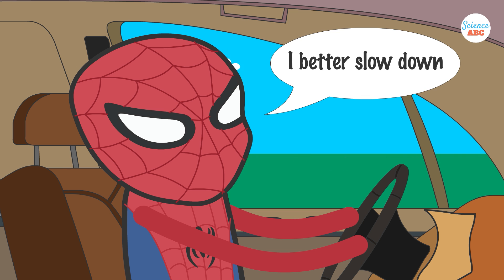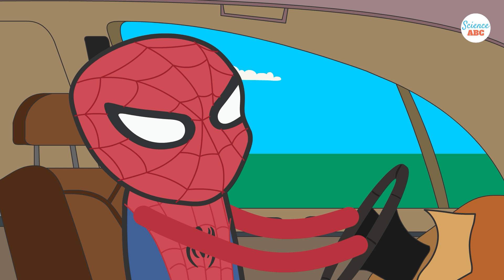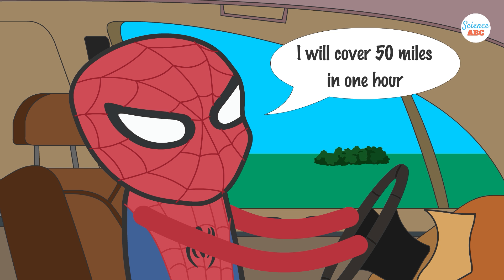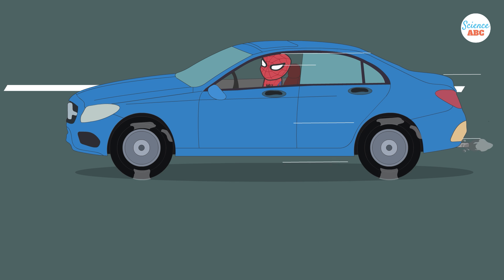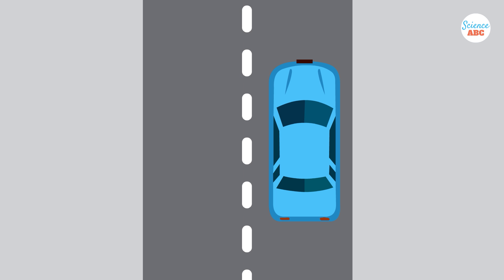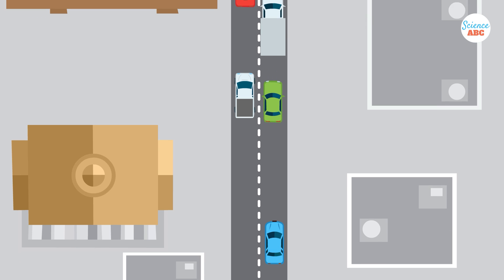If the speedometer says 50 miles per hour, it means that the car is moving at a rate that will cover a distance of 50 miles in one hour. However, it's unlikely that you'll maintain a constant speed for an entire hour. You might speed up or slow down while merging or stopping at traffic signals.